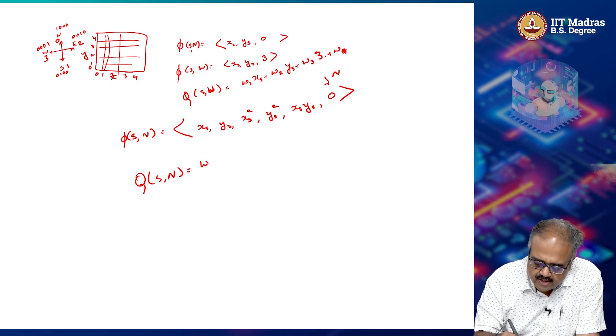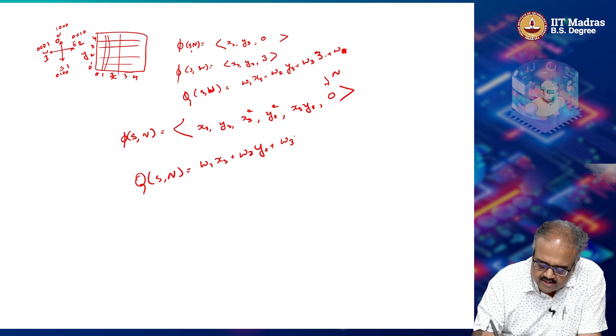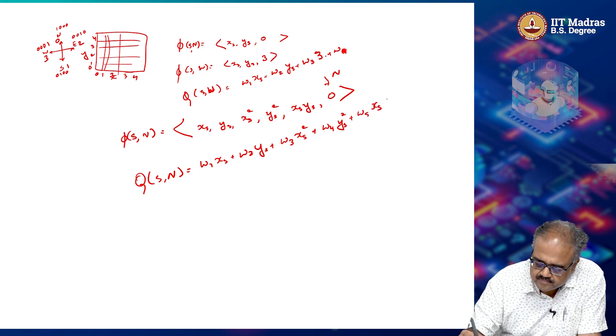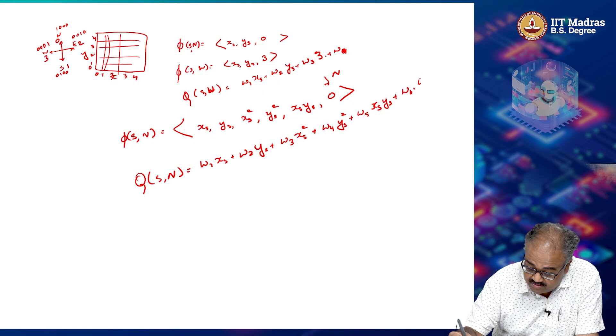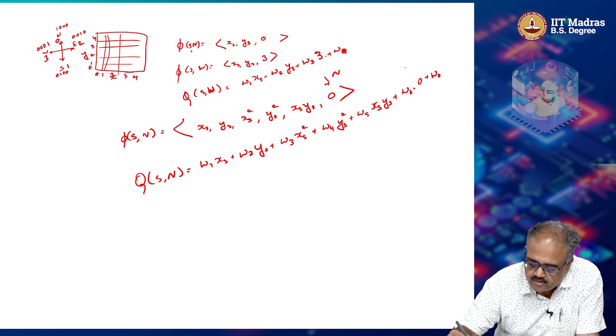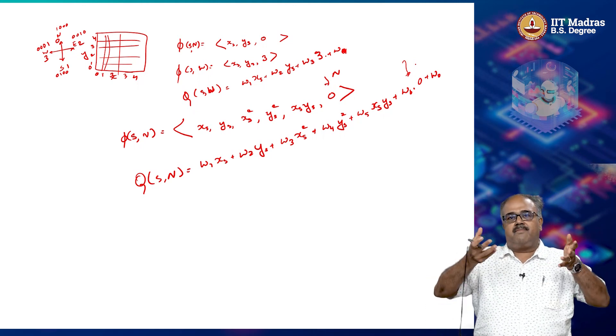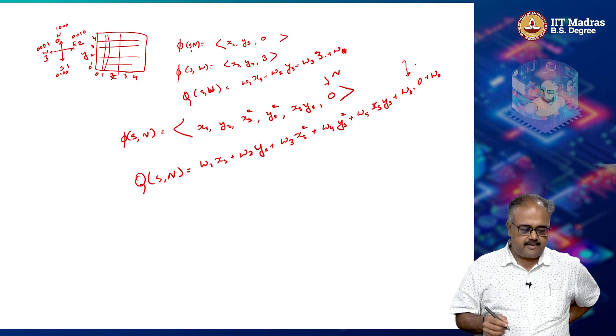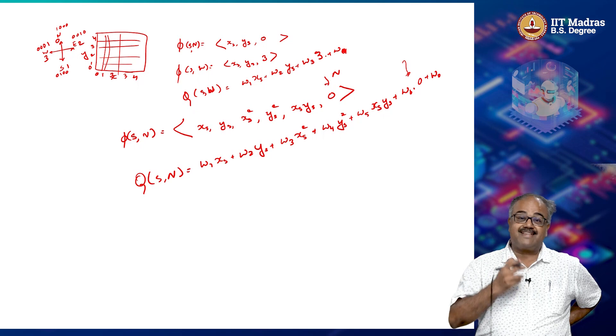So q of s comma north will be w 1 x s plus w 2 y s plus w 3 x s square w 4 y s square w 5 x s y s, w 6 times 0 actually and then w naught. So basically the action is not contributing anything to the actual value that you are computing. So that would mean that the action will have to kind of baseline the values, but think about that.